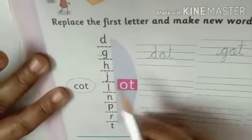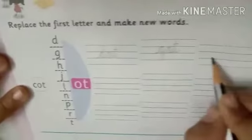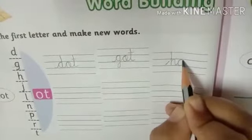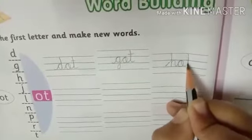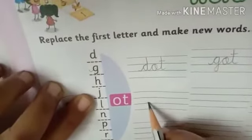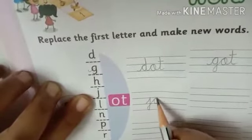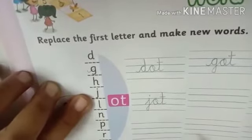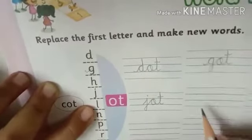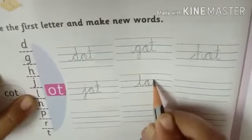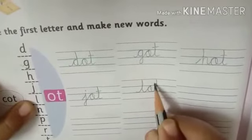Now H — the new word will be H, O, T — hot. Now J, so we write J, O, T — jot. Next is L, so L, O, T — lot.